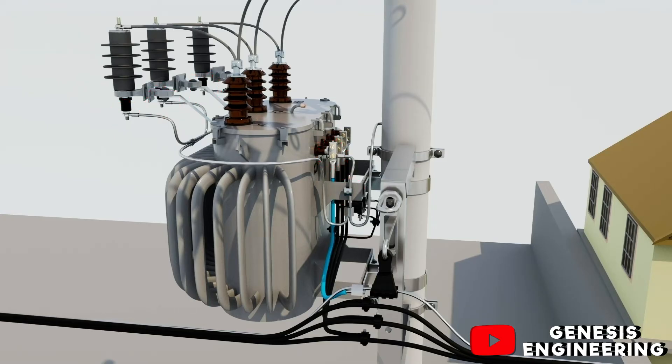To supply the neutral wire to the houses, a connection branch is used that is connected to the low voltage network.